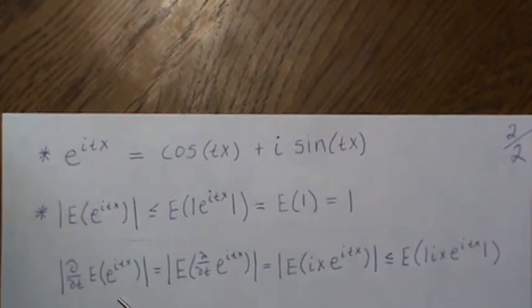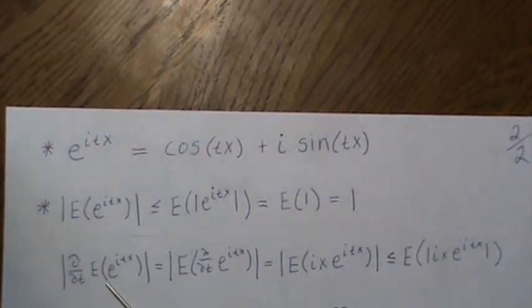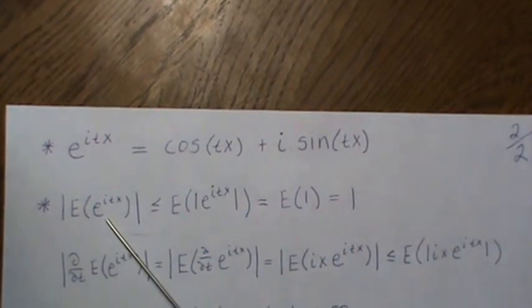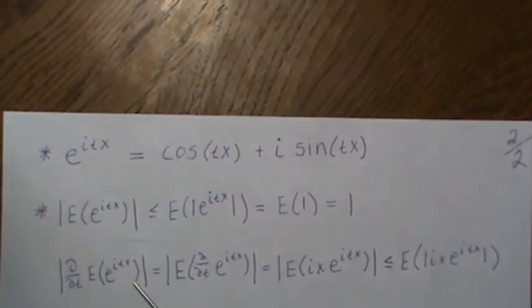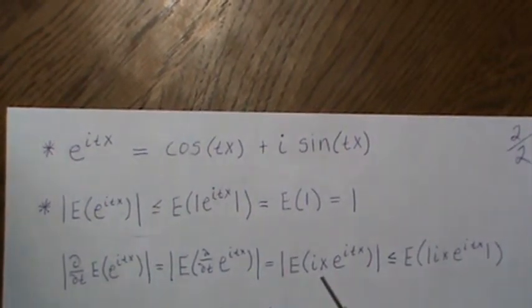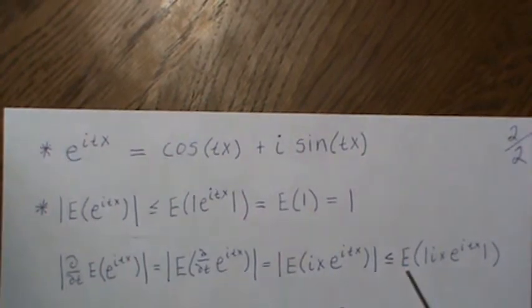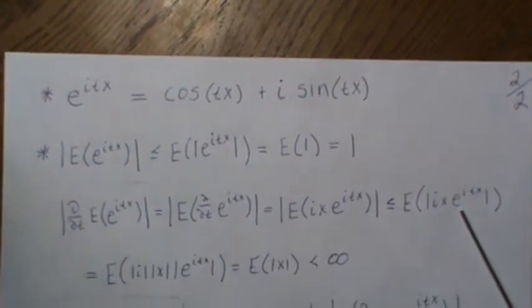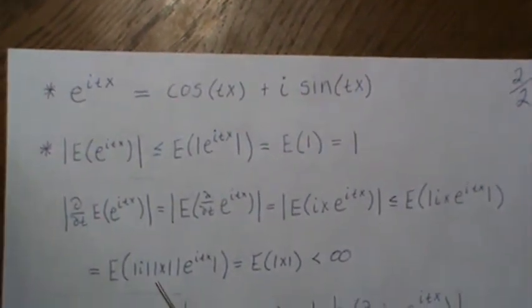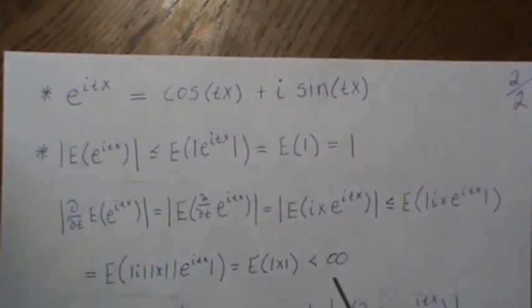Now let's look at the first derivative of the characteristic function. Can we pass the differentiation inside the integral or expectation sign? The answer is yes, because the function is bounded — we just showed that. Passing the derivative in, we get φ'(t) = E[iX·e^(itX)]. Taking the absolute value: |φ'(t)| ≤ E[|iX·e^(itX)|]. Breaking into a product of moduli: |i| = 1, |e^(itX)| = 1, so we're left with E[|X|], which is finite.